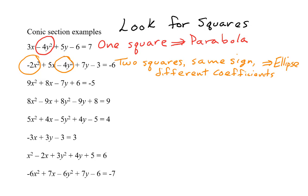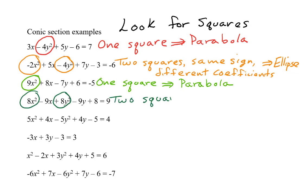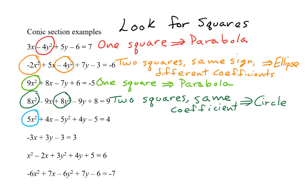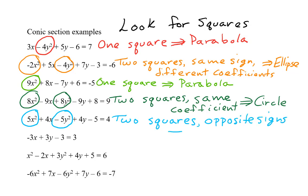In the third example, we see only one square term, 9x squared. With one squared term, this equation represents a parabola. In the next equation, we see 8x squared and also 8y squared — two squared terms with the same coefficient, same sign and same magnitude. That means this equation represents a circle. Next, we have an equation with 5x squared and minus 5y squared — both 5s, but opposite signs. When you have two squares with opposite signs, the equation is a hyperbola.